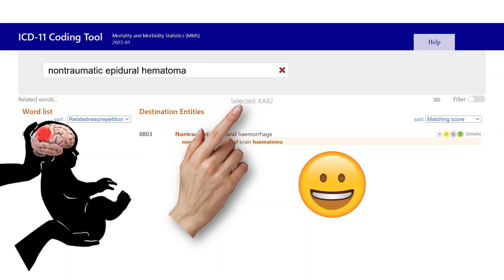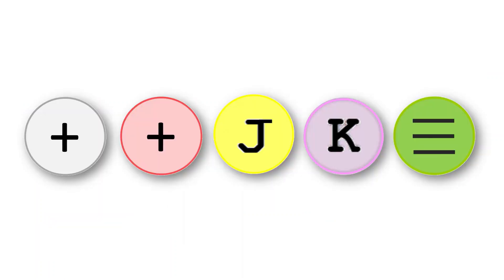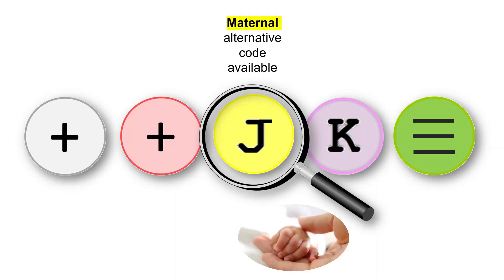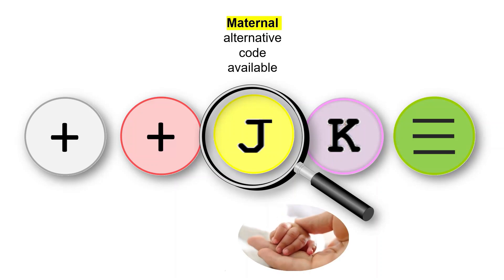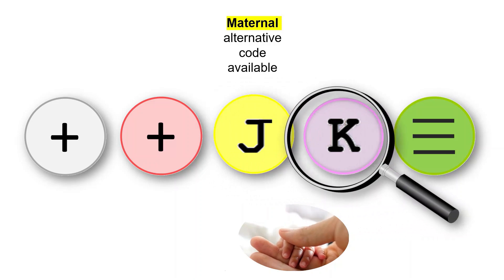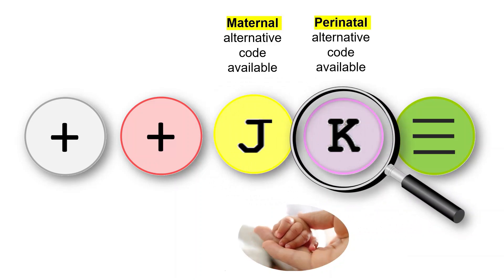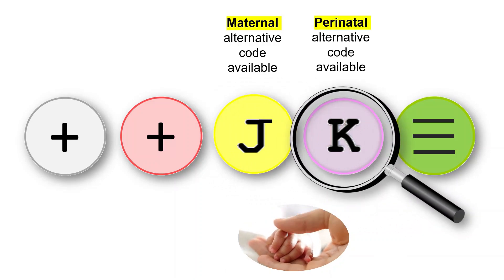So we're now able to decipher two more icons. The J icon means there is a related category in the maternal chapter for your search result. The K icon means there is a related category in the perinatal chapter for your search result.